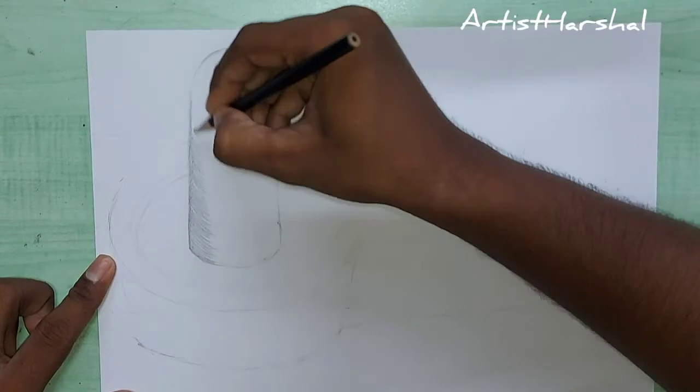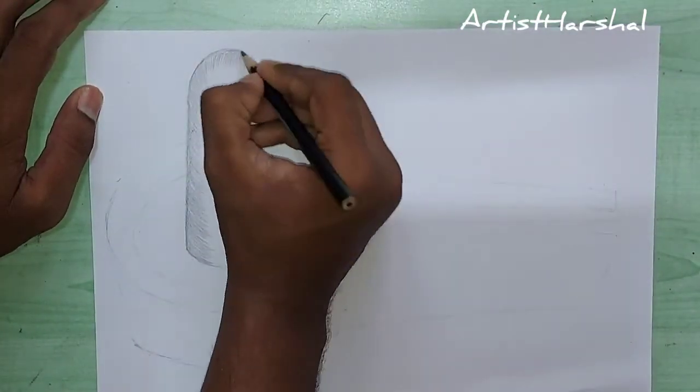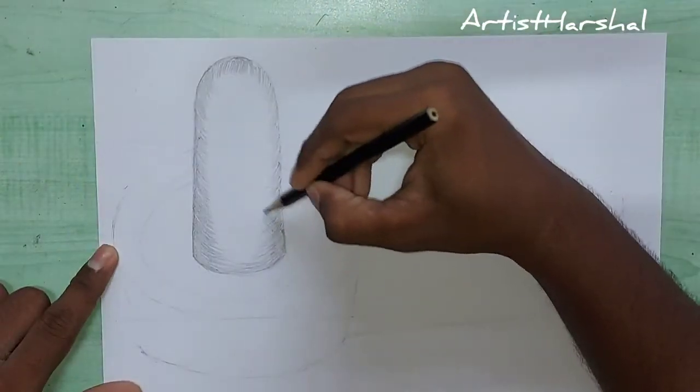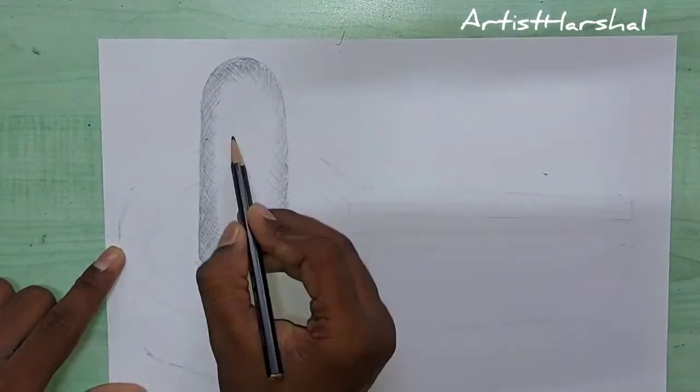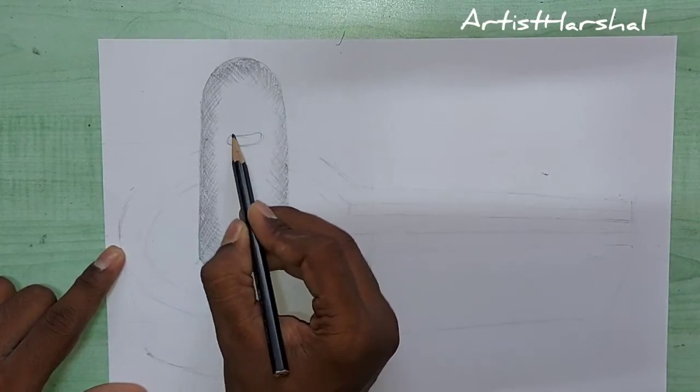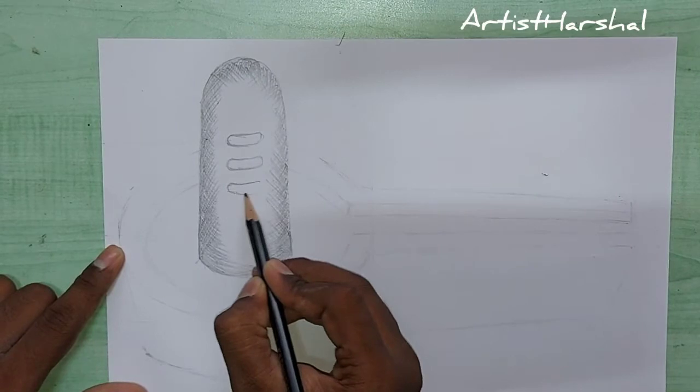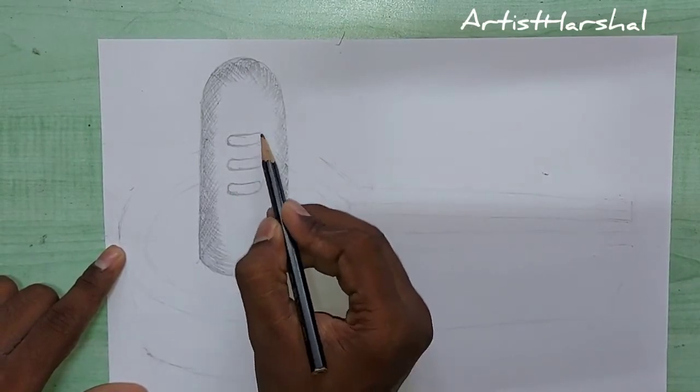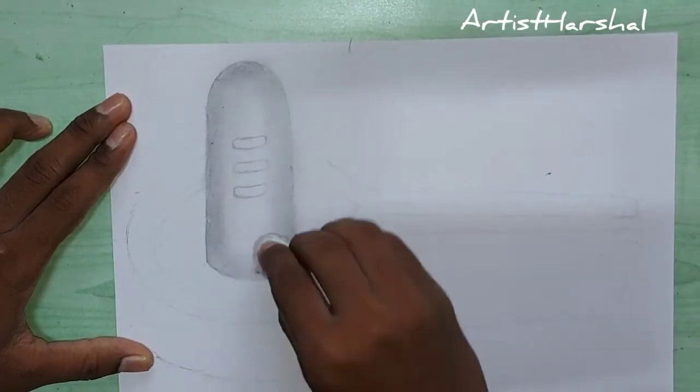Now erase the unwanted reference lines. For sketching, you have to use a 2B pencil for light shade and 6B pencil for darker shade. It's very easy - light shade for 2B pencil and dark shade for 6B pencil.